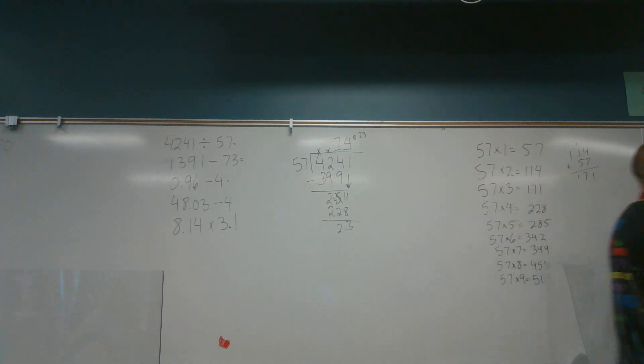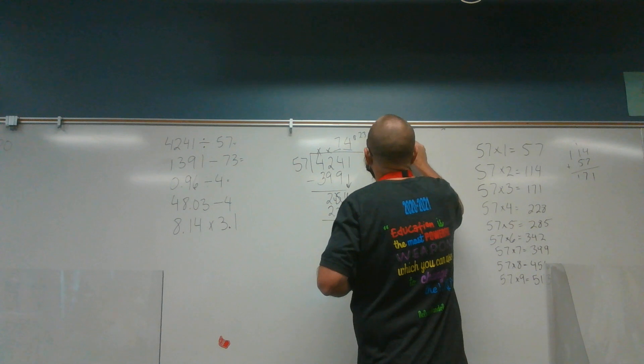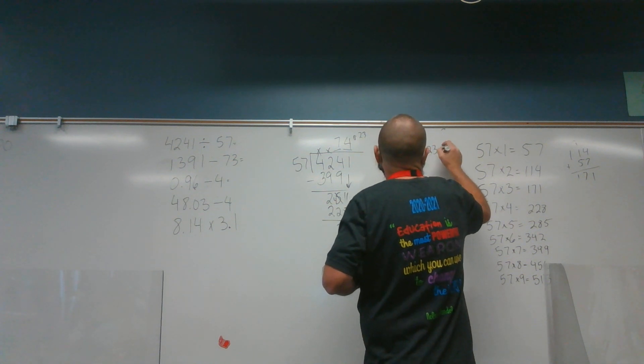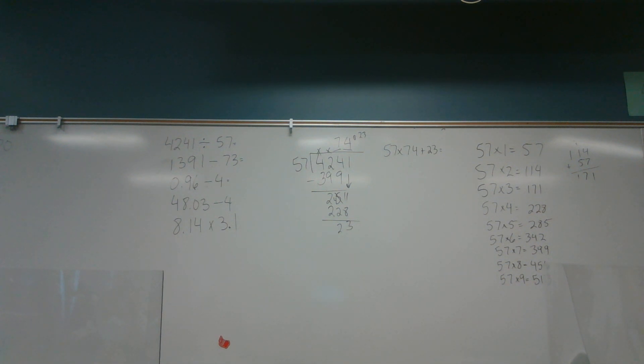But wait, Mr. McMurdo, I want to know if I got the problem correct. That's a good idea. To figure that out, we'd multiply 57 times 74 and add 23, and we want it to equal 4241. So that is how we would determine whether or not we got it done correctly. I'm not going to do that because y'all can do that on your time.